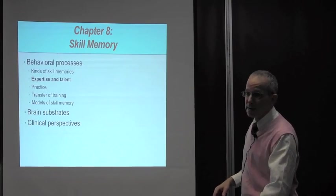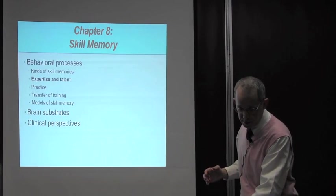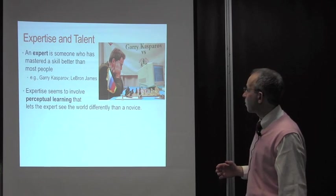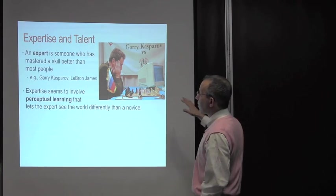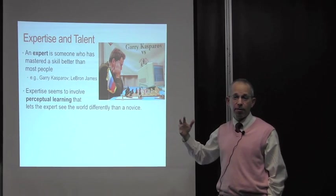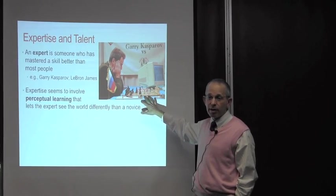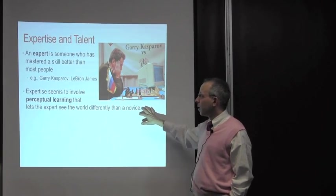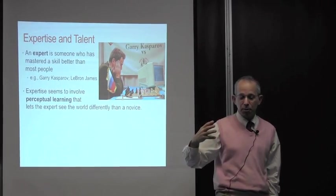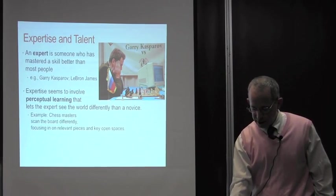One of the things that makes skills so interesting is that there are some people who seem to have fabulous skills. An expert is someone like Gary Kasparov or LeBron James, people who are very skilled at some cognitive or motor ability. Expertise often seems to involve perceptual learning, so experts not just do things differently, but they seem to see the world differently.